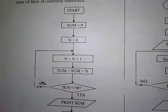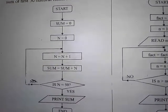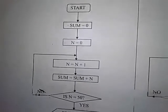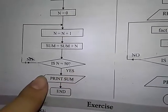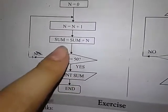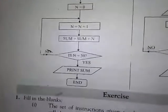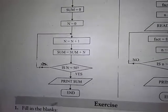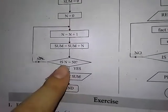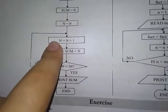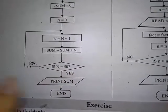Condition ہے: is n greater than 50? کیونکہ آپ نے پہلے 50 natural numbers کا sum لینا ہے۔ جب n کی value 50 کے equal آ جائے گی تو sum print کروا دیا جائے گا۔ ابھی n = 1 ہے تو condition false ہے، اس لئے 'no' کی طرف جائے گا اور loop دوبارہ چلے گا۔